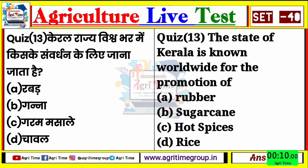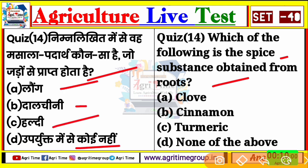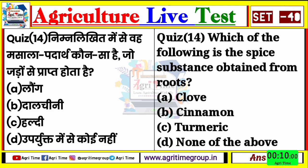बढ़ते हैं अगले question के ओर - quiz number 14 ये रहा आपके screen पर। निम्नलिखित में से वह मसाला पदार्थ कौन सा है जो जड़ों से प्राप्त होता है? Which of the following is the spice substance obtained from roots? Options देखिए: लॉंग, दालचीनी, हल्दी, या फिर none of the above। Important question है - quiz 14 का right answer क्या होगा? चलिए comment कीजिए।